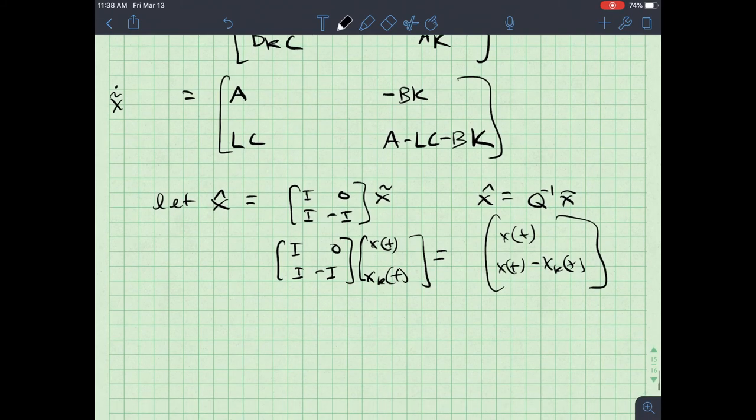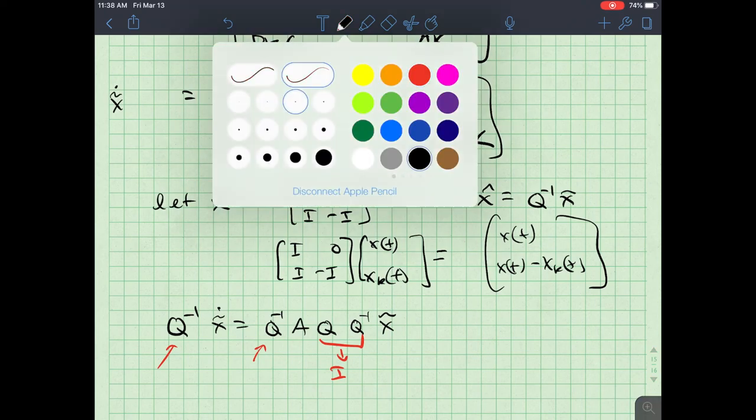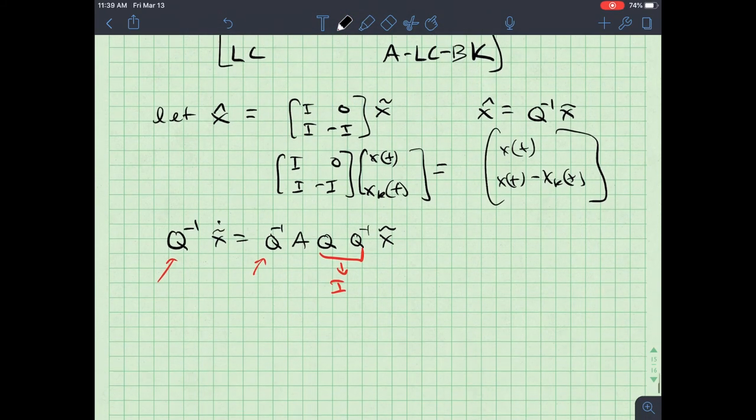So then I can do the following. I can say, all right, Q inverse X Tilda of dot or X Tilda dot is equal to Q inverse A Q Q inverse X Tilda. So what I'm doing here is I'm pre multiplying everything by Q inverse. And then I'm inserting in here an identity matrix. And this is what we call a similarity transform. And so the new closed loop system.